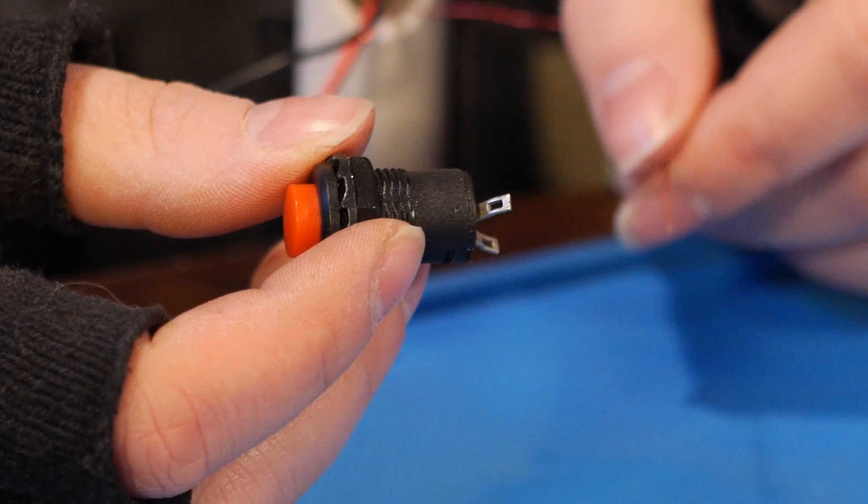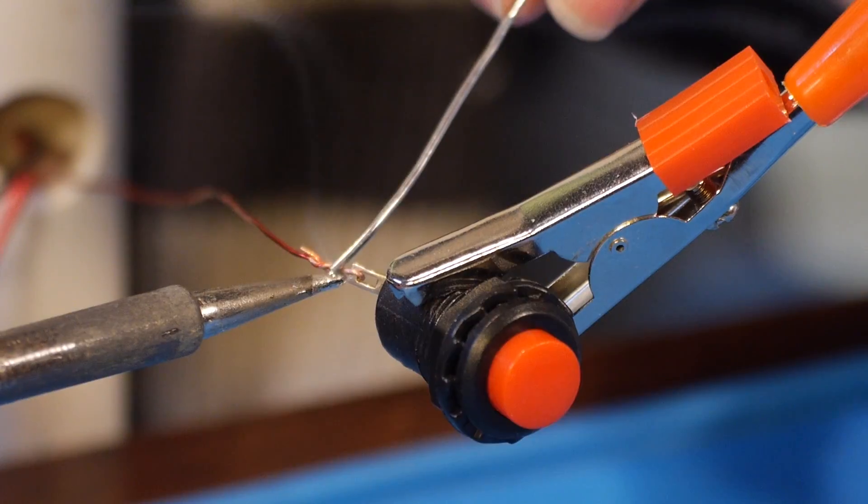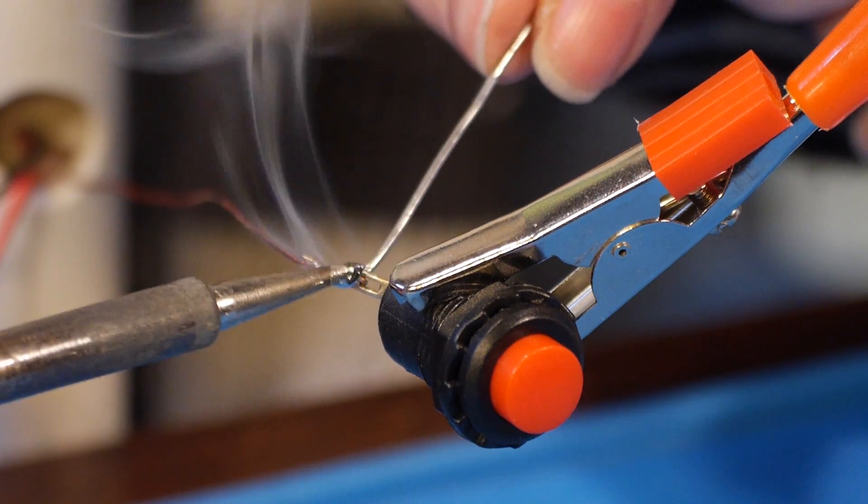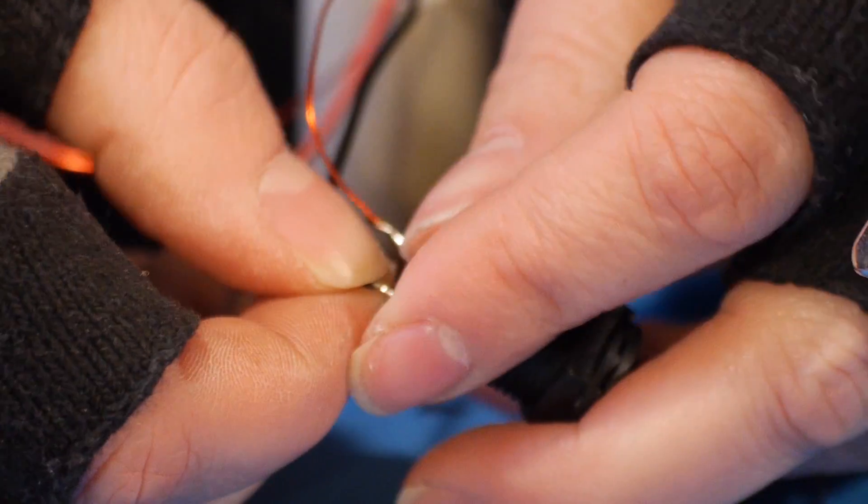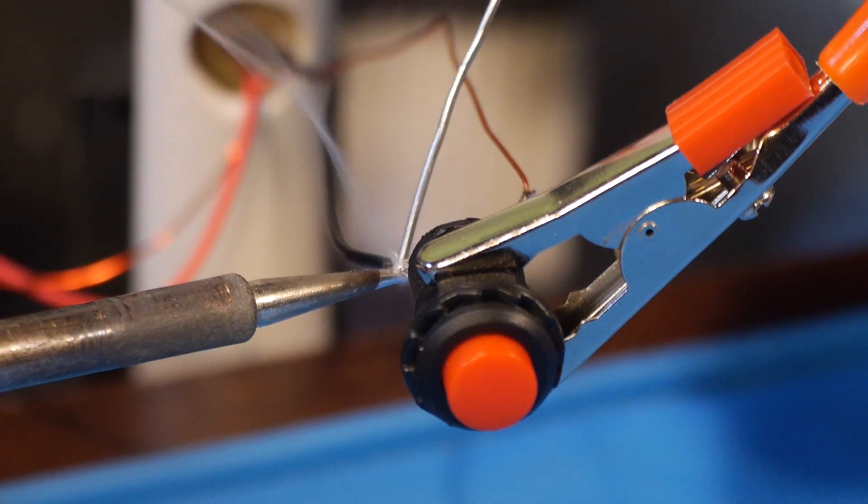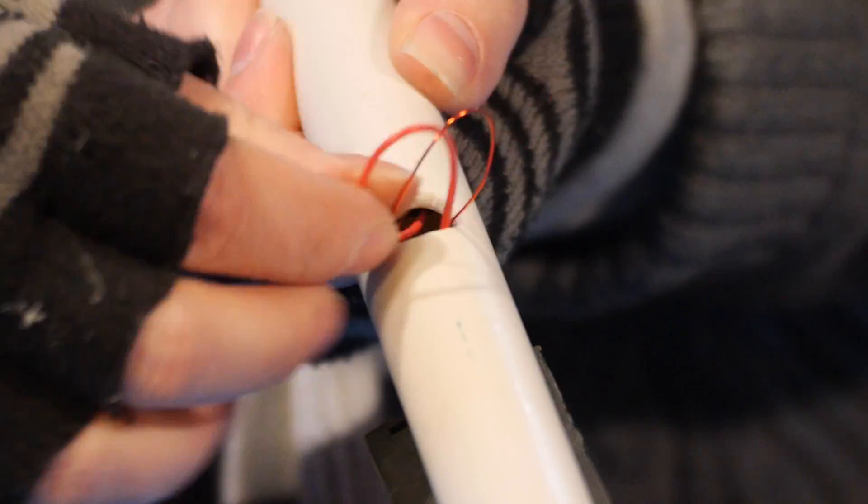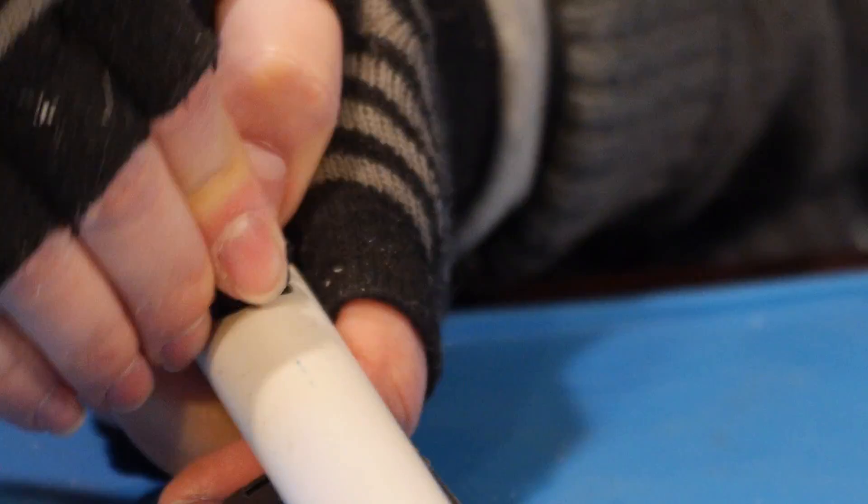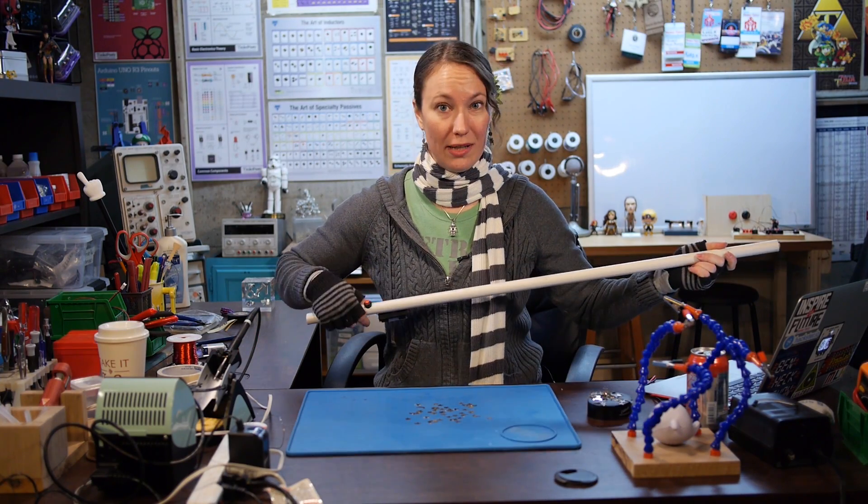The second battery pack lead and the remaining magnet wire will get soldered to either side of the switch. Adding bits of electrical tape to help prevent shorts. I'm going to test and make sure it works before I glue my button in place.